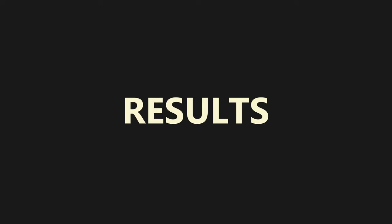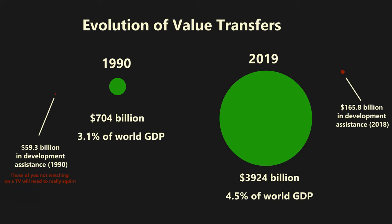Ricci's model, in effect, measures unequal exchange through two main channels: the traditional unequal exchange of final goods that are imported and exported, and the unequal exchange of trade in intermediate goods that pass through global chains of production and circulation. Looking at the data from 1990 to 2019, Ricci finds that world value transfers in total trade rose from $704 billion, or 3.1% of world GDP, to nearly $4 trillion in 2019, or 4.5% of world GDP. Meanwhile, in the same window of time, the total development assistance received by developing countries was a mere $165 billion. In plain terms, the global north got 23 times more in value transfers than it gave back in the form of development assistance.